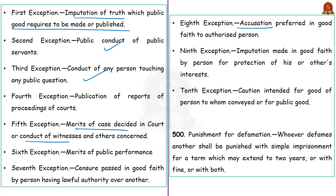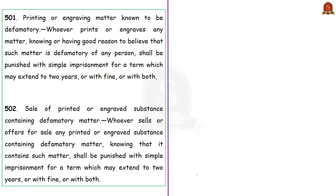It is clear that the definition of defamation is vague and thus leaves a wide scope for its misuse. Section 500 says that whoever defames another shall be punished with a fine or simple imprisonment for a term which may extend to two years. Section 501 deals with printing or engraving matter with good reason to believe it is defamatory, and section 502 is about selling printed or engraved substances knowing they contain defamatory matter. In both cases, the convicted shall be punished with a fine or maximum two years of imprisonment.